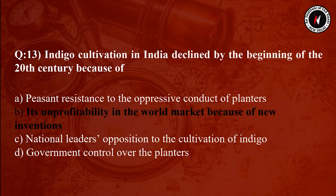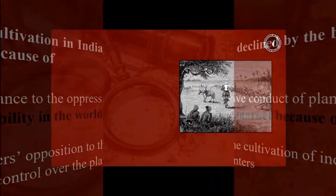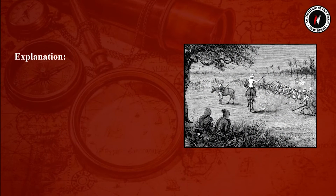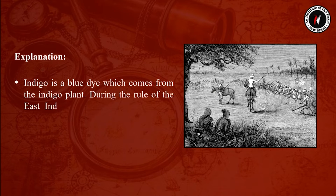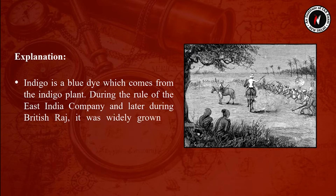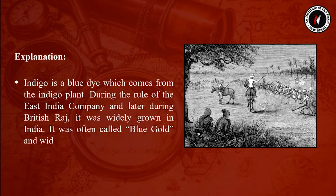The answer is Option B. Indigo cultivation declined because of its unprofitability in the world market due to new inventions. Indigo is a blue dye which comes from the indigo plant. During the rule of the East India Company and later during British Raj, it was widely grown in India, often called 'blue gold' and widely traded in European markets.